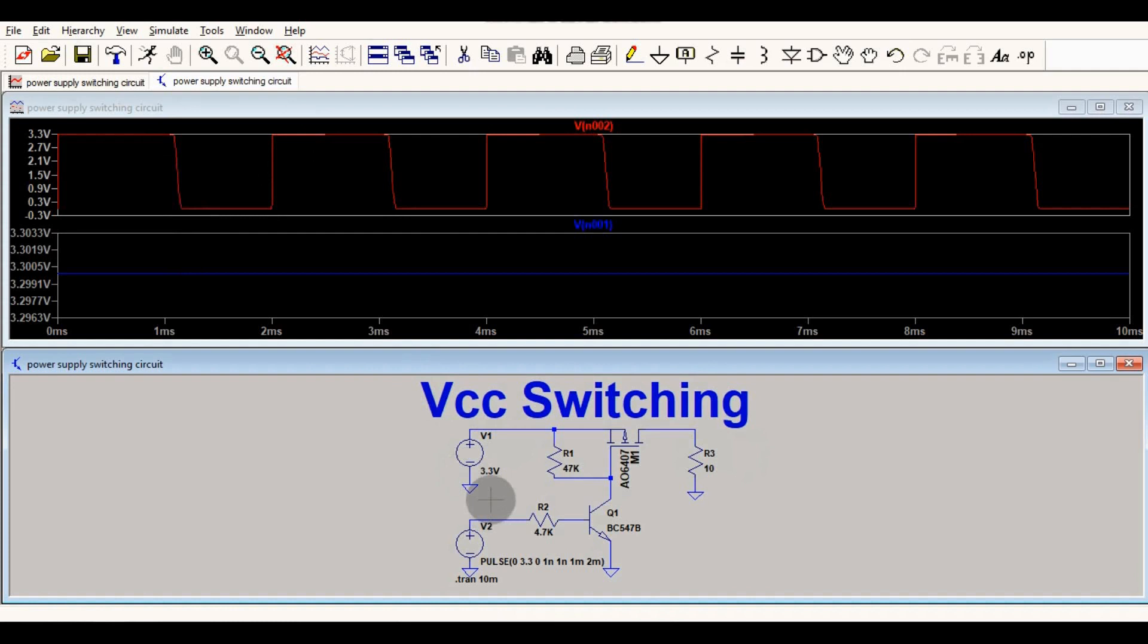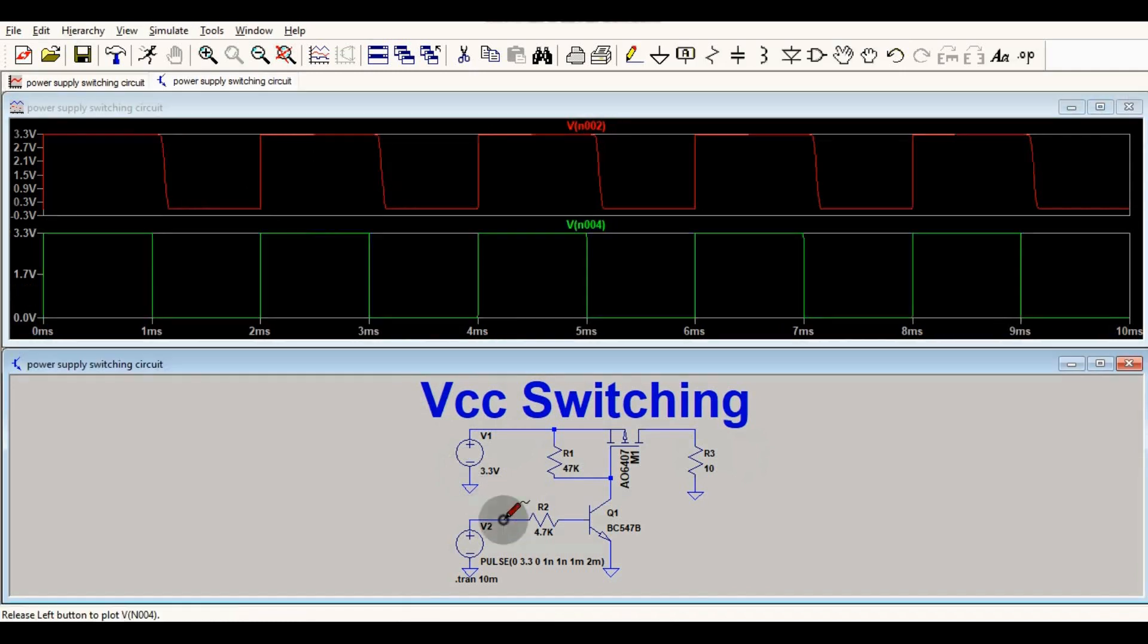How is it switching? Let's see. The signal coming from your microcontroller is this, and this is now our output signal. You can see whenever your signal coming from your microcontroller is high, your output is also high. That means your output is 3.3 volts, meaning your load